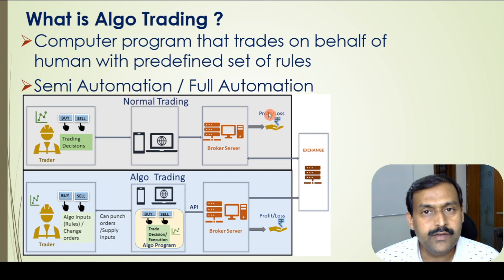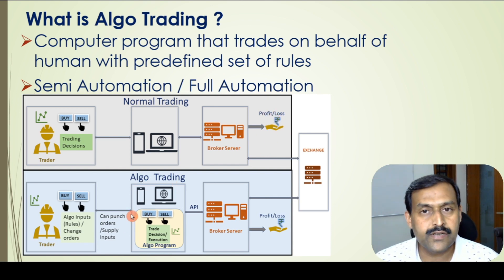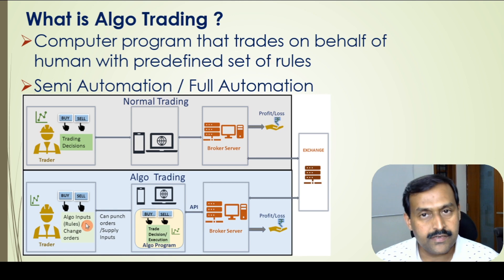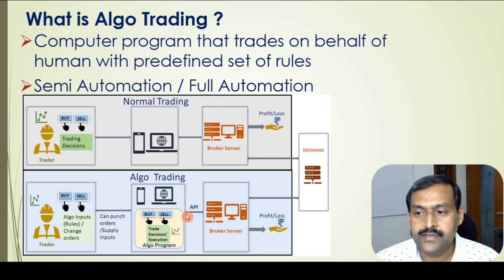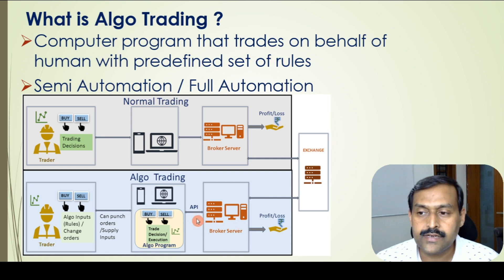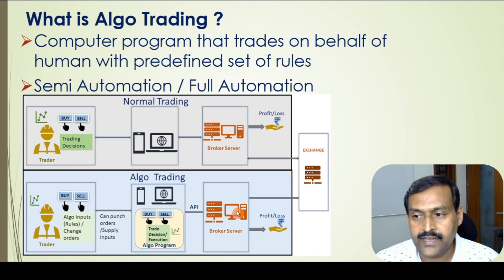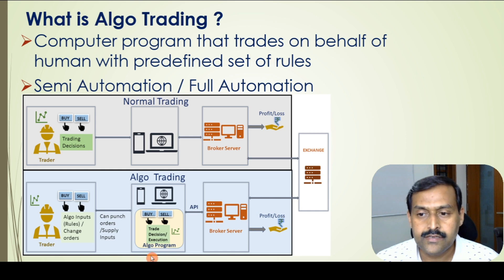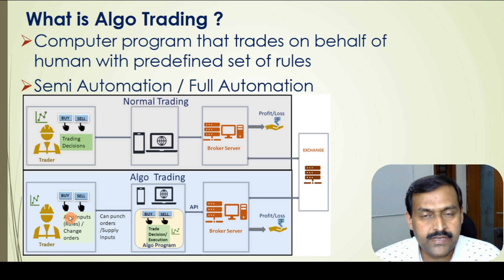At the end of the trading you will have a profit and loss statement. In the case of algo trading, there is a computer program that takes all the information from the trader. The trader will select the algo that needs to be run along with the required inputs, then the program makes all the buy and sell decisions and sends those orders to the broker server using the APIs provided by the broker. All those orders again go to the exchange and of course it will have a profit and loss statement.